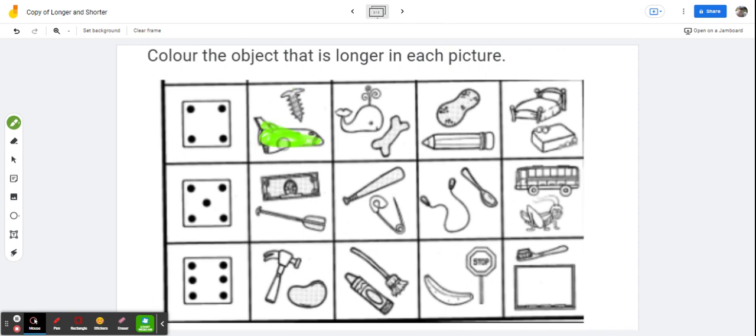This time I got the number six, so I'm going to go down here and I'm going to color. Is a hammer longer or is a jelly bean, or maybe just a lima bean, longer? A hammer is definitely the longer object, so I'm going to color that object in.